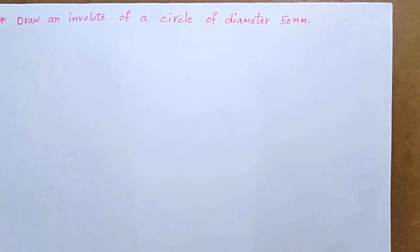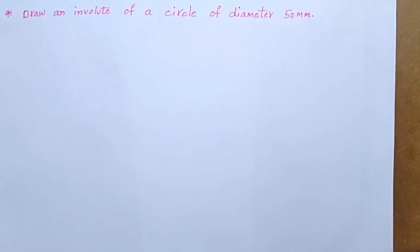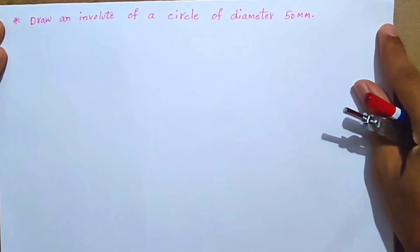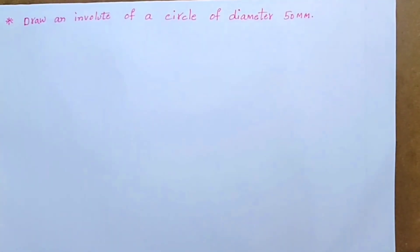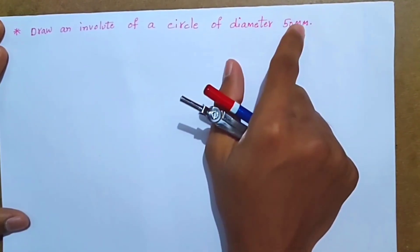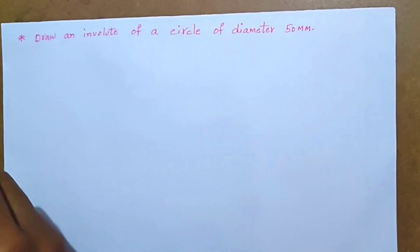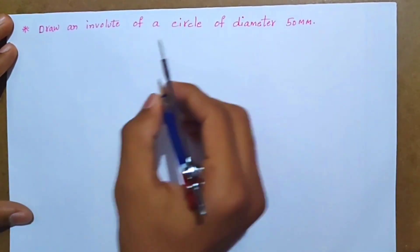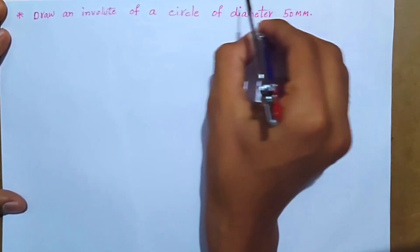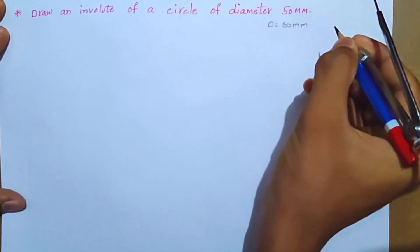Hi guys, welcome to Fearless Education channel. Today we are going to draw an envelope of a circle of diameter 50mm. So first, D is equal to 50mm.